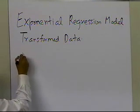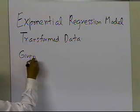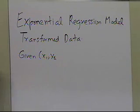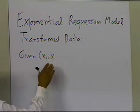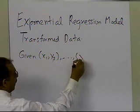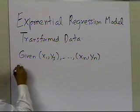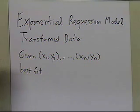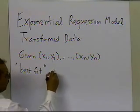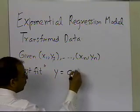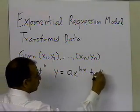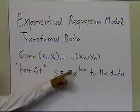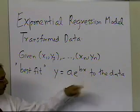So let's go ahead and see what that all means. What we want to do is: somebody is giving us n data points — x1, y1, all the way up to xn, yn — and asking us to best fit. We are talking about best fit in the least squares sense, asking us to best fit y = a^(bx) to the data.